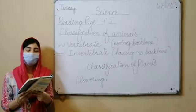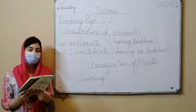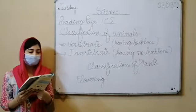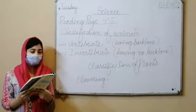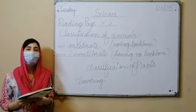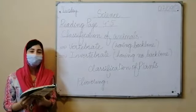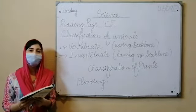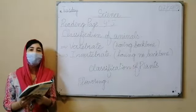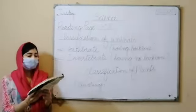Flowering plants are of various colors and sizes. They include small plants and colored plants — these are the different types of flowering plants.